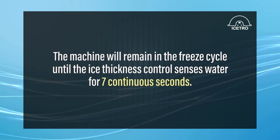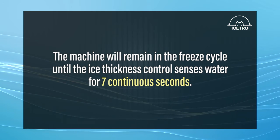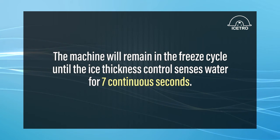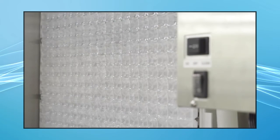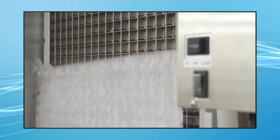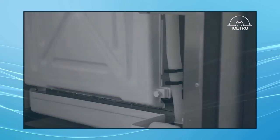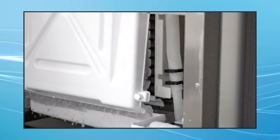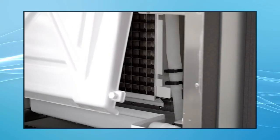The machine will remain in the freeze cycle until the ice thickness control senses water for seven continuous seconds, then it will initiate harvest. The machine stays in harvest until the ice clears the evaporator, falls into the bin, and causes the curtain switch to open and close.